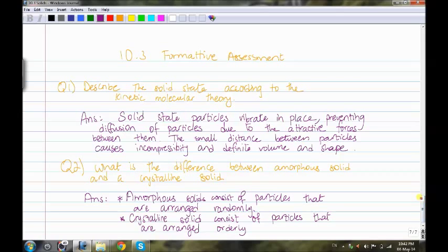Second question—we only have two questions in this part. What is the difference between amorphous solids and crystalline solids? It's simply that amorphous solids consist of particles that are arranged randomly, and crystalline solids consist of particles that are arranged orderly.